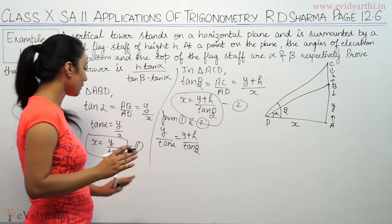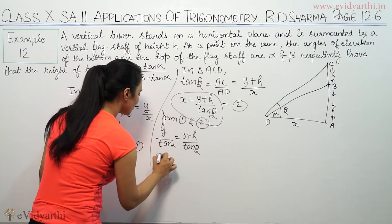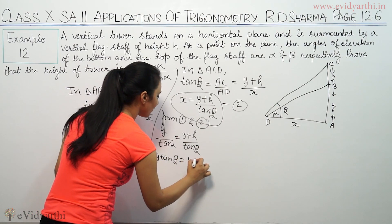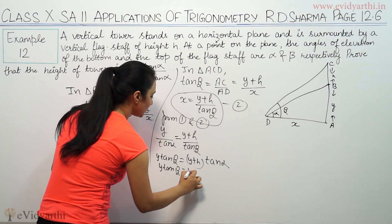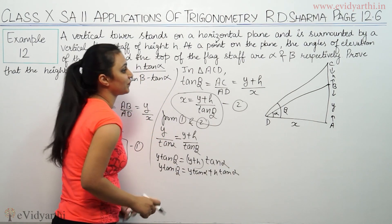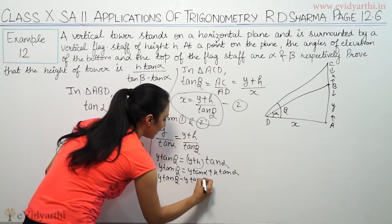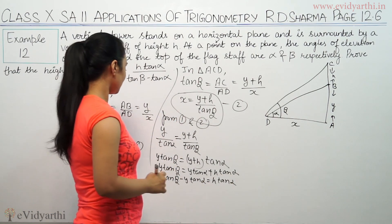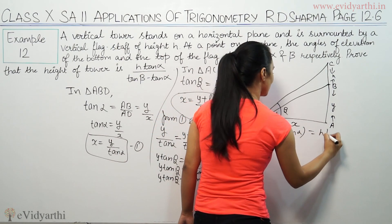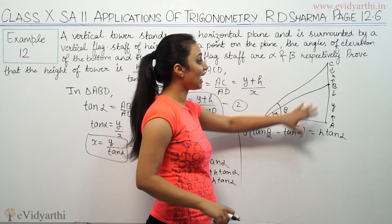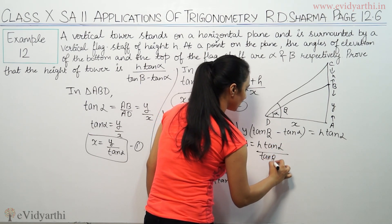Cross-multiplying: y·tan β = (y + h)·tan α. Expanding: y·tan β = y·tan α + h·tan α. Rearranging: y·tan β − y·tan α = h·tan α. Factoring: y(tan β − tan α) = h·tan α. Therefore y = h·tan α / (tan β − tan α), which is the height of the tower.